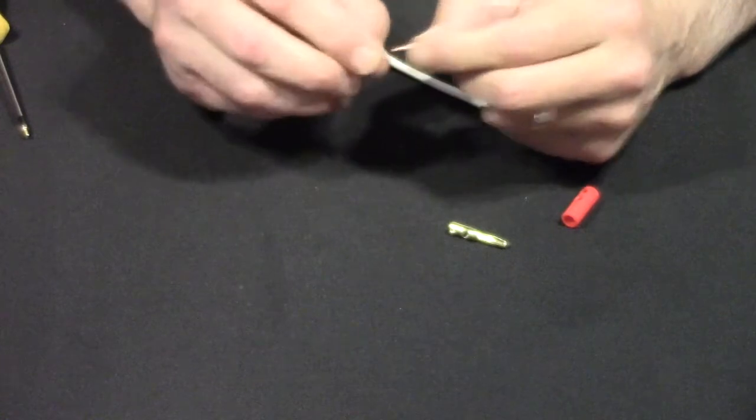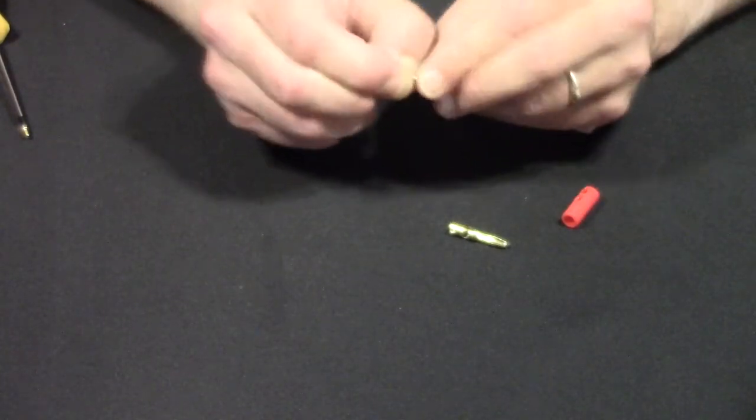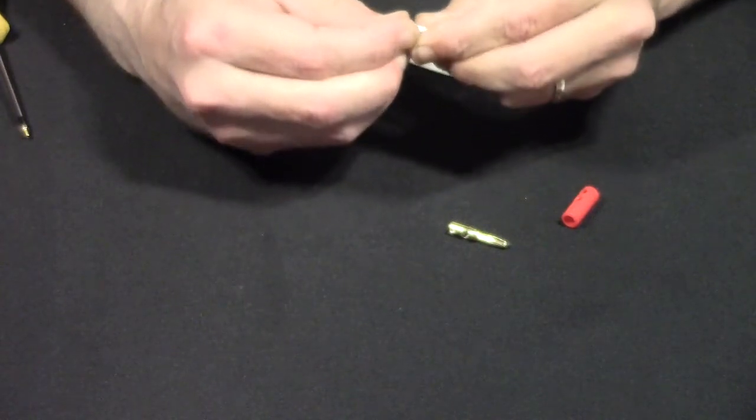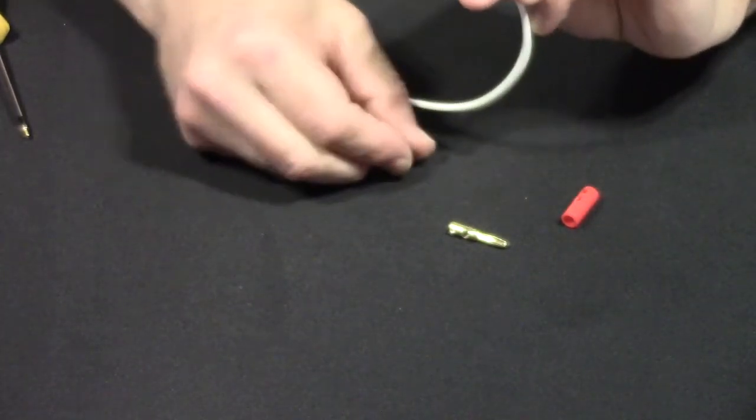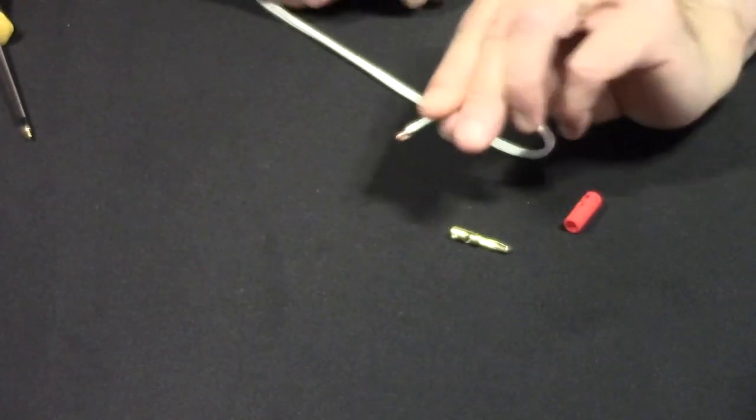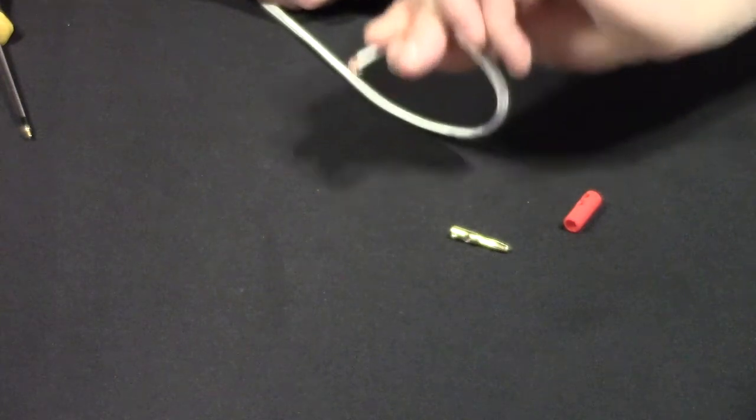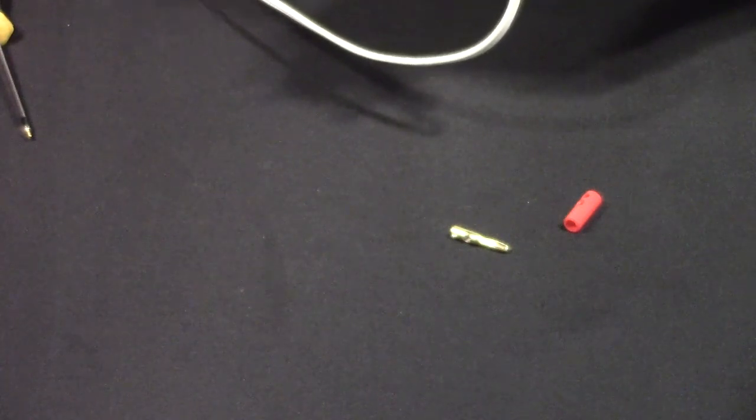And then all you got to do is fold the stripped portion in half so that you make a little hook like that. That's just a half inch of insulation, or a half inch stripped off, folded in half to make a little hook.